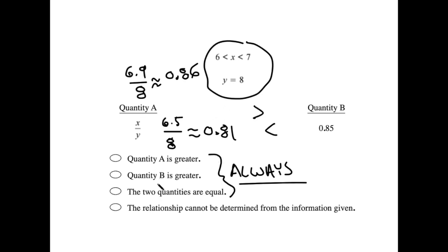So I can't say that quantity b is always greater. I can't say that quantity a is always greater. I can't say that the two quantities are always equal. So I'm left with answer option d. The relationship cannot be determined because we have conflicting cases.